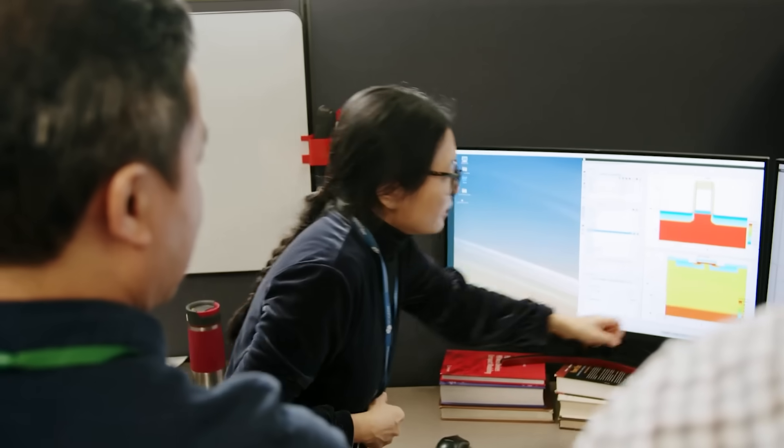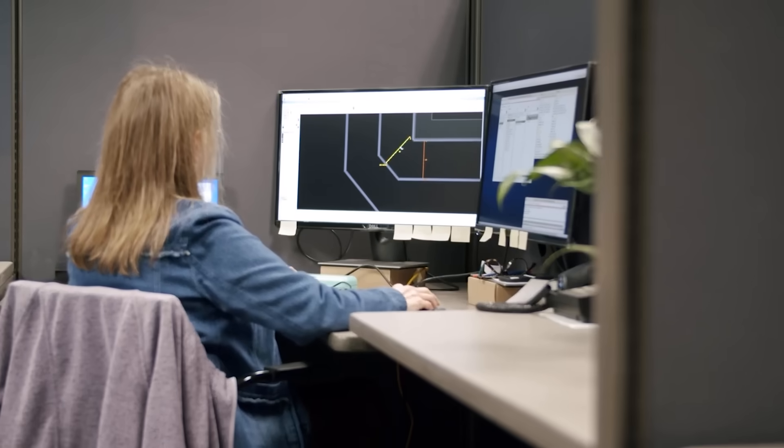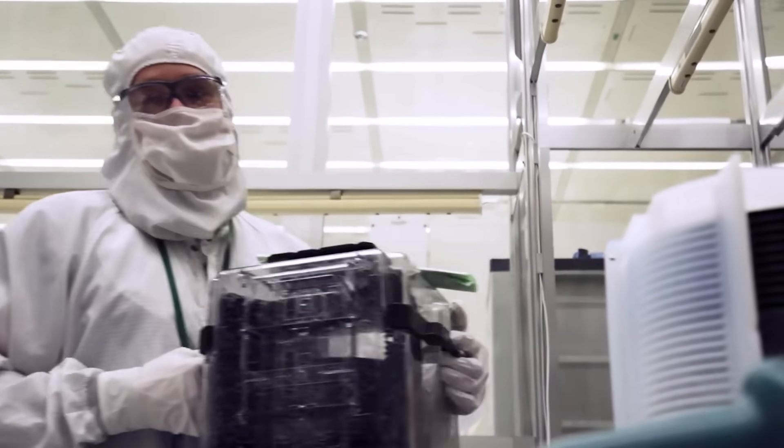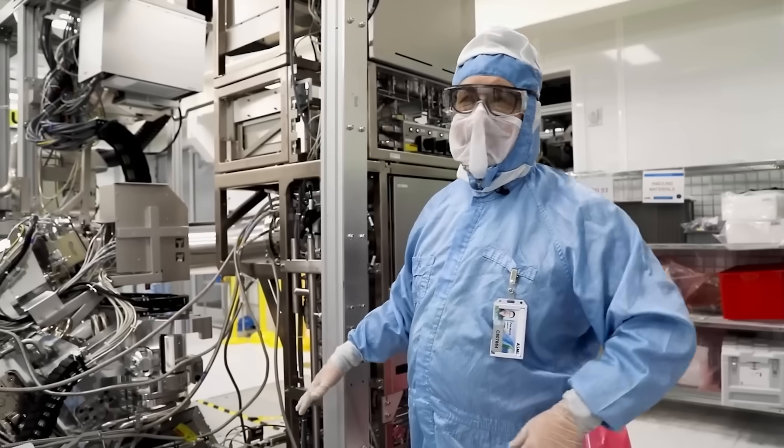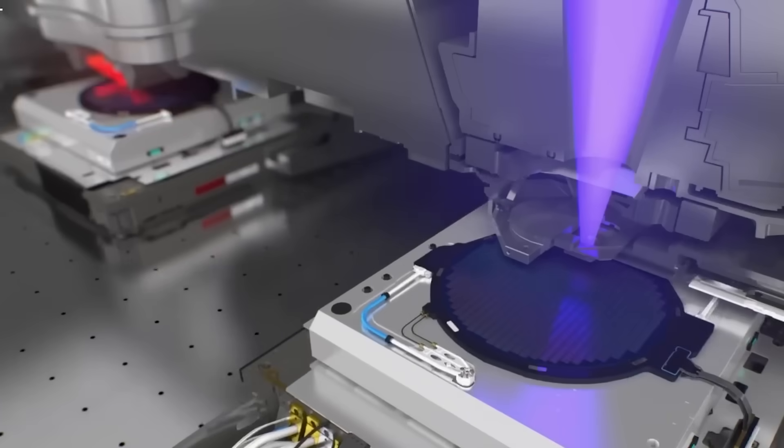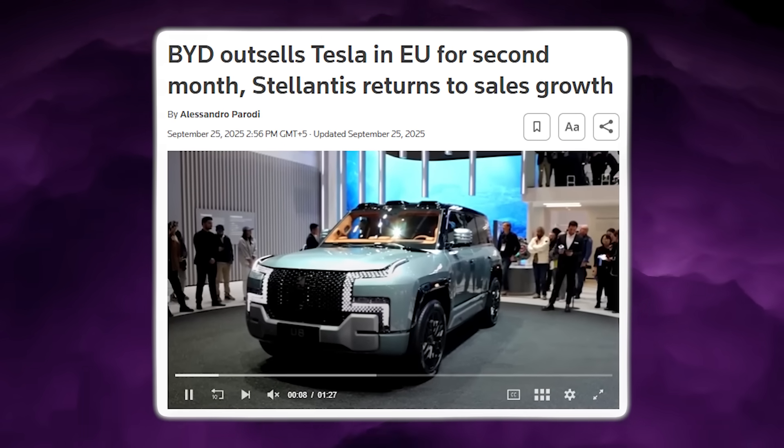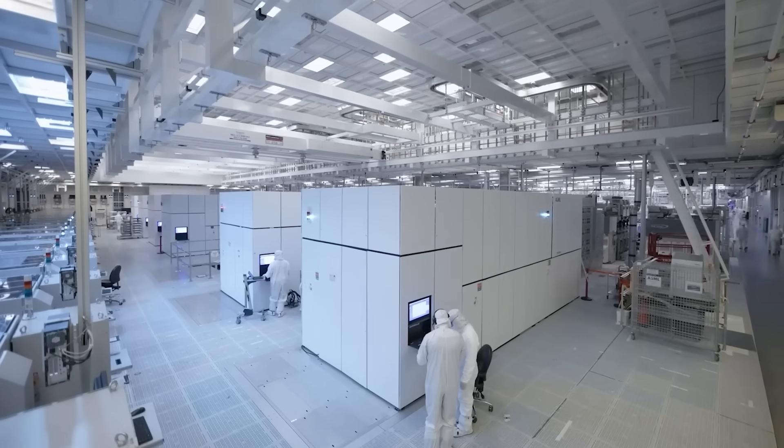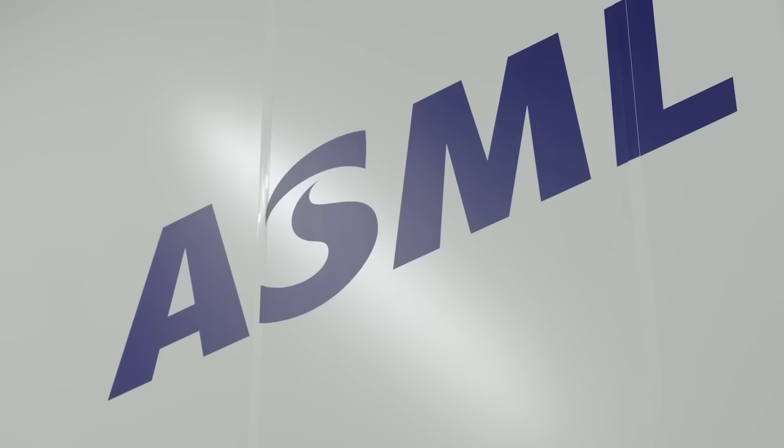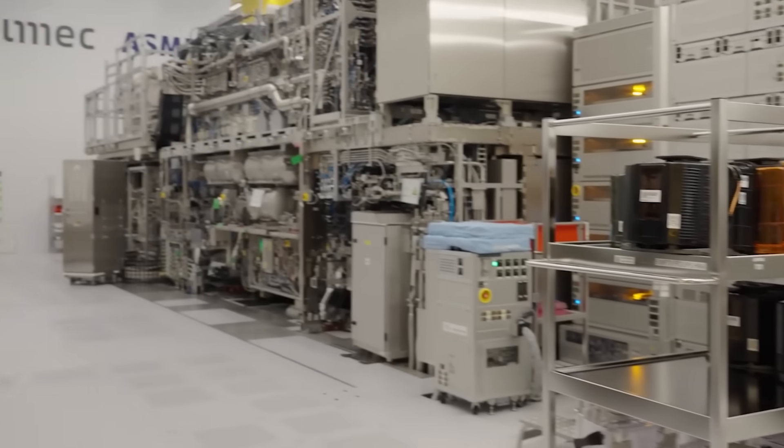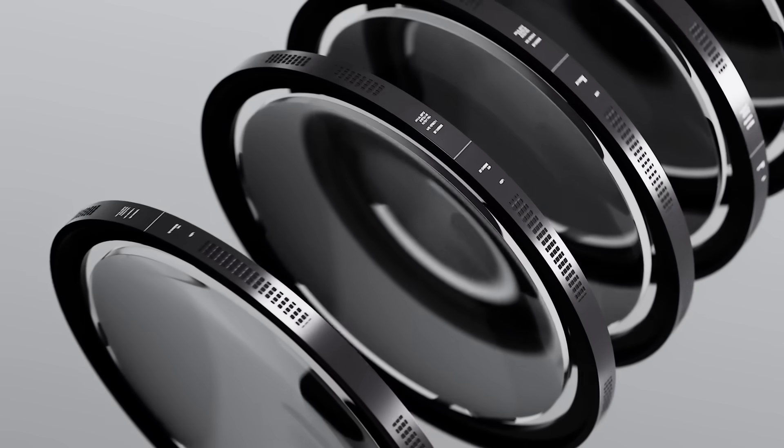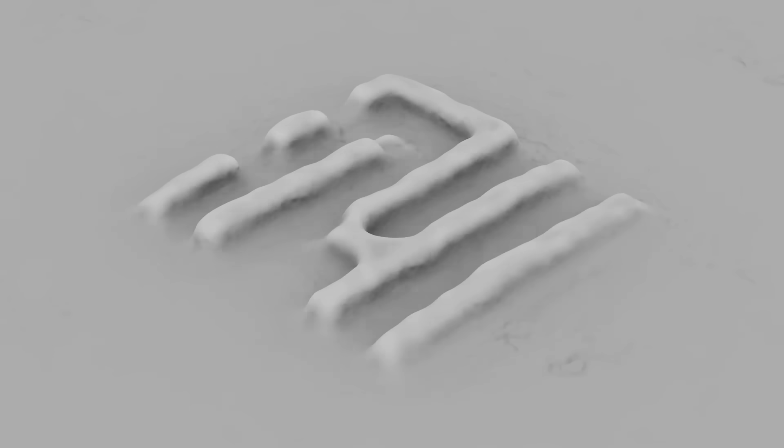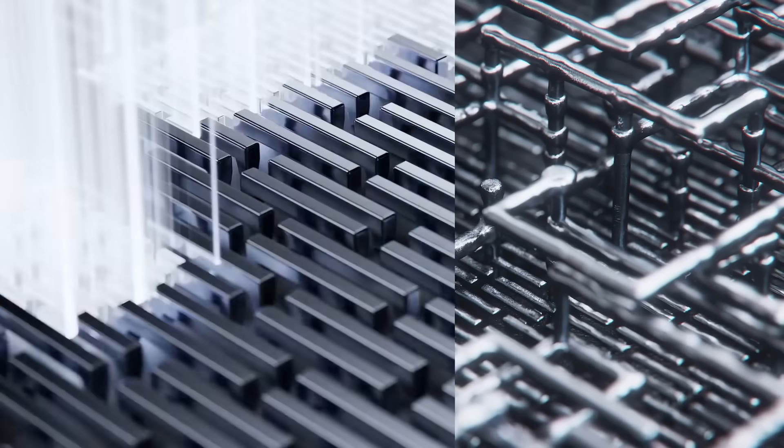This is why the involvement of former ASML engineers in the Shenzhen project is so significant. EUV is not something that can be copied from blueprints alone. Even ASML engineers have said that reverse engineering EUV would be nearly impossible, even with full drawings and a physical machine. And yet similar claims were once made about electric vehicles, before Chinese manufacturers like BYD proved otherwise. According to Reuters, China's EUV effort relied not only on human expertise, but also on salvaged hardware. Components from older ASML machines were reportedly acquired through secondary markets and auctions, along with parts from Nikon and Canon systems. This does not mean China has recreated the entire supply chain, but it does mean enough components were gathered to assemble a prototype capable of testing, learning, and iteration.